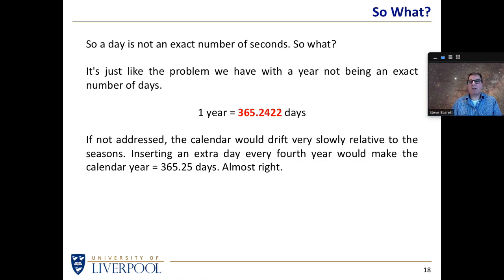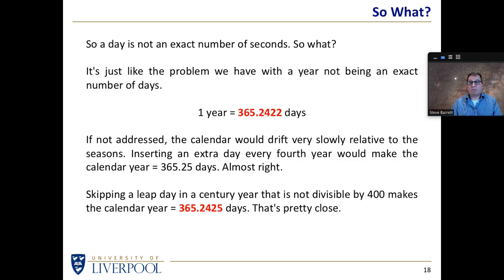So we can keep the calendar reasonably in sync with seasons if we add a leap day every four years. It's not quite right though. 365.25 isn't good enough. So there's a rule that says we'll skip a leap day in a century that's not divisible by 400.